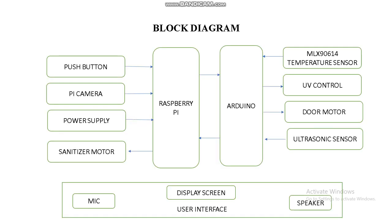This is our block diagram. A push button enables the entire circuit. The Pi Camera captures whether the person is wearing a mask or not. After that, we measure the body temperature of the person. Then the ultrasonic sensor detects if a hand is present; if present, the sanitizer motor rotates to sanitize the hand.